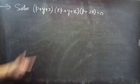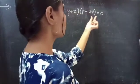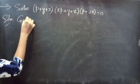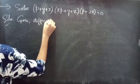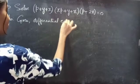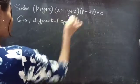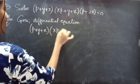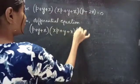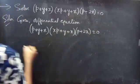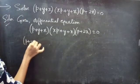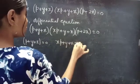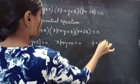Problem: solve (P + y + x)(xP + y + x)(P + 2x) = 0. Given this differential equation, we have (P + y + x) = 0, and (xP + y + x) = 0, and (P + 2x) = 0.